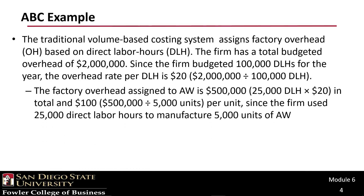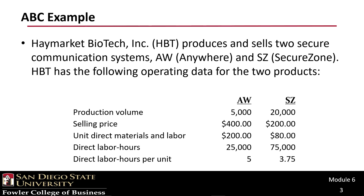The factory overhead assigned to AW is $500,000 in total — that's 25,000 direct labor hours times $20 — and $100 per unit, since the firm used 25,000 direct labor hours to manufacture 5,000 units of AW. We can see that on the previous screen: there's the 5,000 units and the 25,000 direct labor hours.